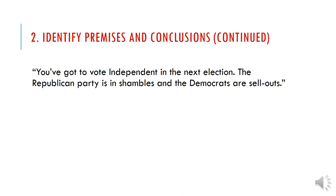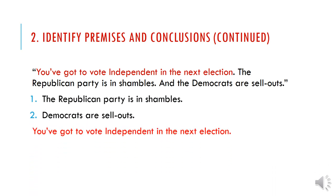When we look at this argument, what jumps out as the conclusion and what jumps out as the premise? It's often helpful to find the conclusion first, as it is the main thing that's trying to be proven. So when you think about what the argument is trying to tell you, you will typically find the conclusion. So if my argument says 'you've got to vote independent in the next election, the Republican Party is in shambles and the Democrats are sellouts' — the first sentence is the conclusion, and what follows will be the premises.